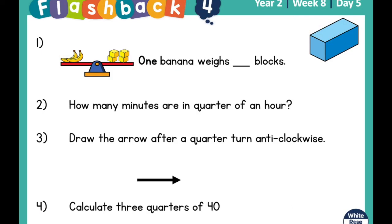Let's have a look at question one. One banana weighs how many blocks? The answer was two blocks. If you have a look at the balance, two bananas weighs four blocks. So if you split them in half — split the bananas in half, you would have just one, and if you split the blocks in half, you would have two. So one banana weighs two blocks.